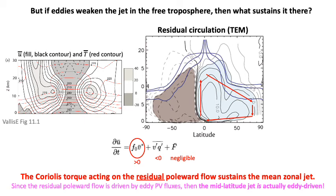After all this, if you're confused, you should be — I actually was too as I went through this. The key thing is that V-prime Q-prime bar is not the only term that depends on the eddies. The PV fluxes are a way of understanding and decomposing what the eddies do. In the end, the eddies shift all eddy activity into the momentum equation. We've moved it out of the buoyancy tendency equation into the momentum equation, but both terms on the right-hand side still depend on the eddies. So in this sense, the entire mid-latitude jet is really eddy driven — but in very different ways in the boundary layer versus in the free troposphere.